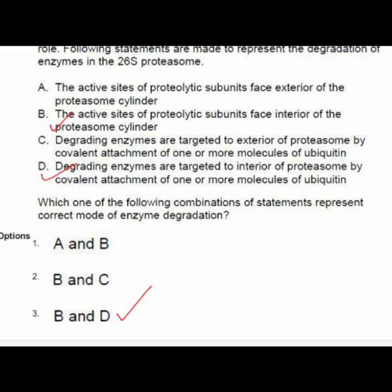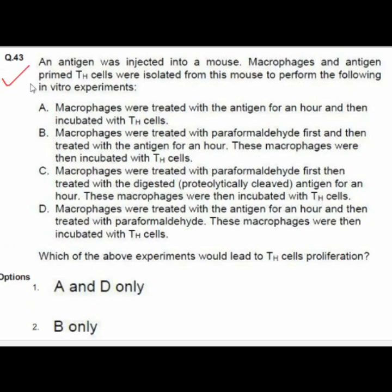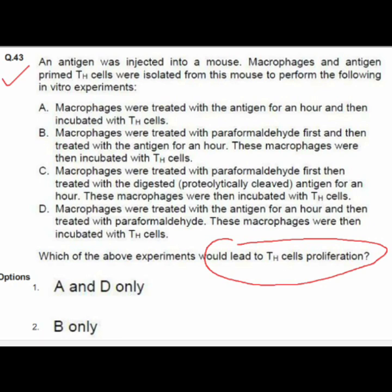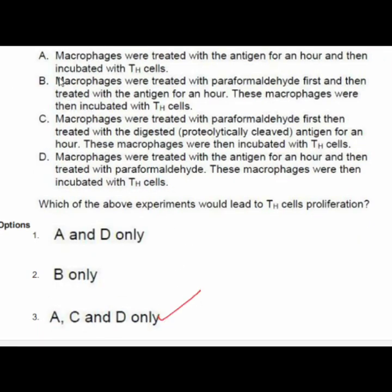Question 43: An antigen was injected into a mouse; macrophages and antigen-primed T-cells were isolated for in vitro experiments to determine which would lead to T-cell proliferation. Option 3 is correct: A — macrophages treated with antigen for one hour then incubated with T-cells; C — macrophages treated with paraformaldehyde first, then with proteolytically cleaved antigen, then incubated with T-cells; D — macrophages treated with antigen for one hour then treated with paraformaldehyde, then incubated with T-cells.